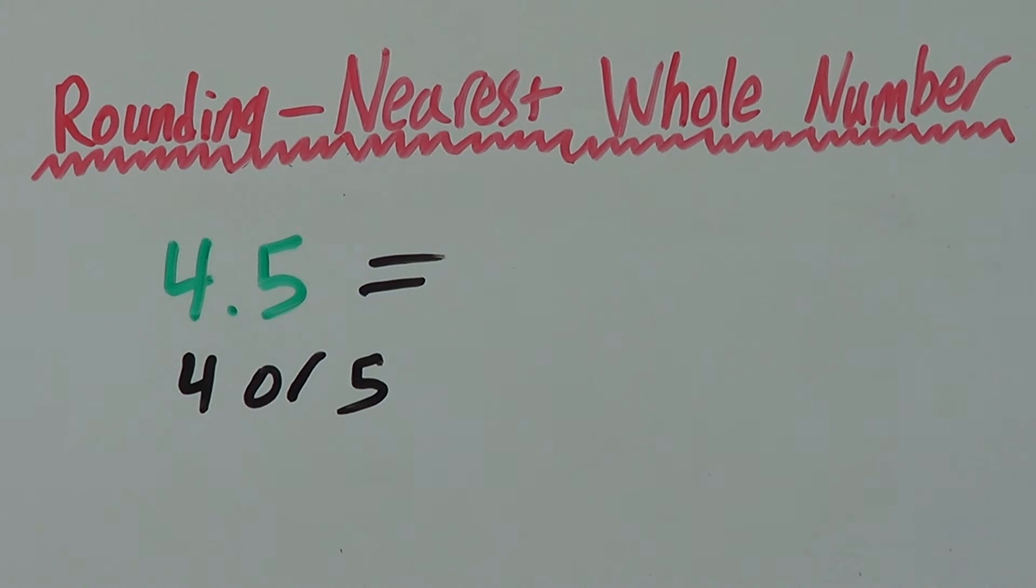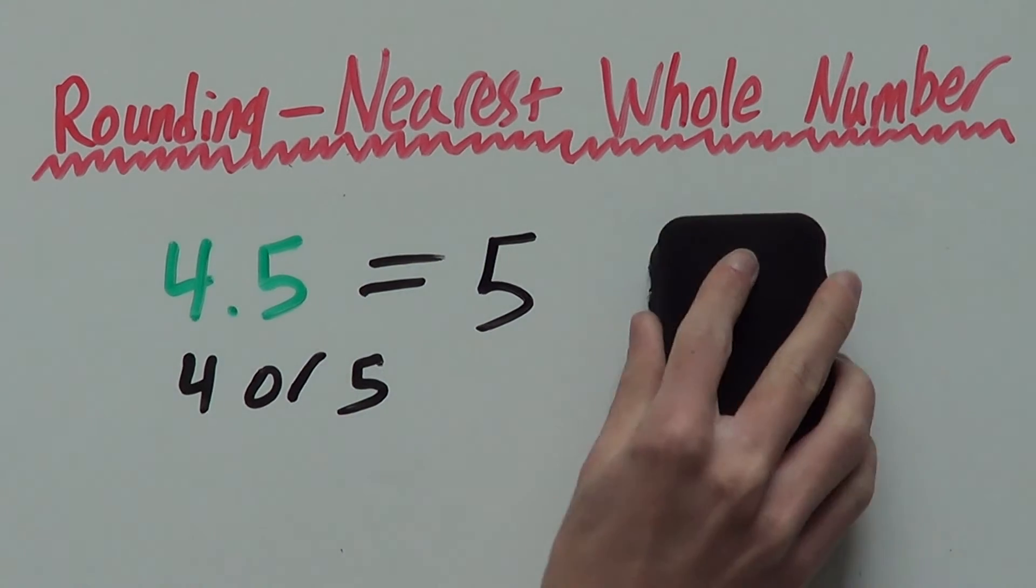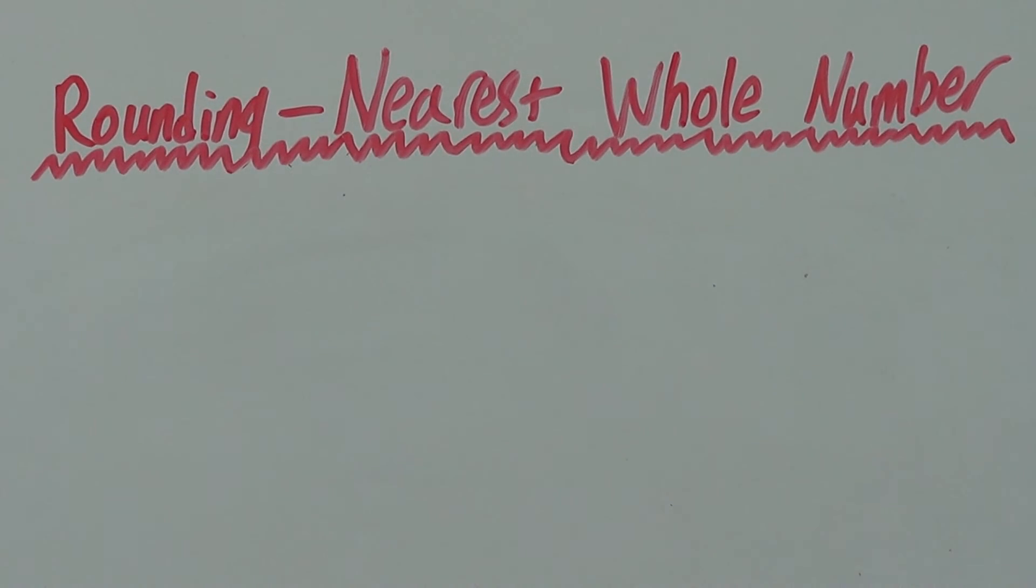But in math, we sort of have a rule where we accept if it's 0.5 or right in between these two numbers, we round up. So, if you ever get 0.5 right in between the two, you always round up. That's an important rule to remember as that one tricks a lot of people on math tests.